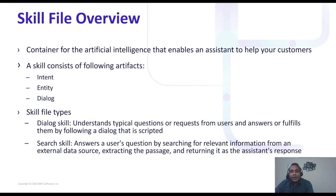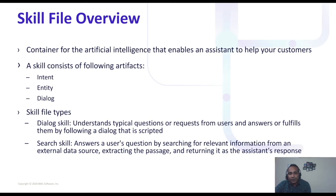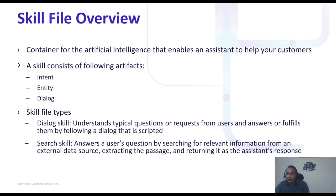The skill file is a component you create in Watson — it's basically a container for all the artificial intelligence to be designed. Within the skill you create artifacts: an intent, an entity, and a dialogue. There are two types of skill files: a dialogue skill, which is the conversation between chatbot and user, and a search skill, which extracts information and resources from documents and knowledge sources.